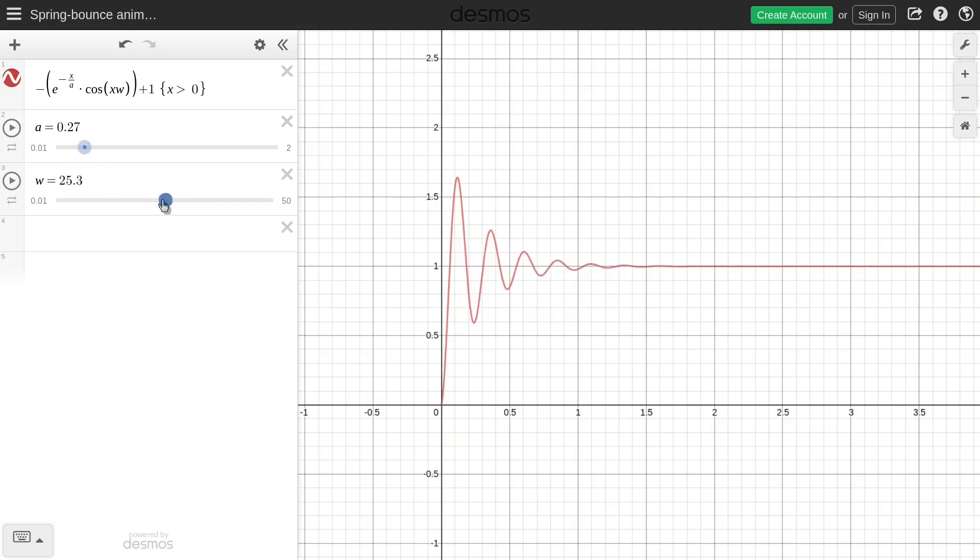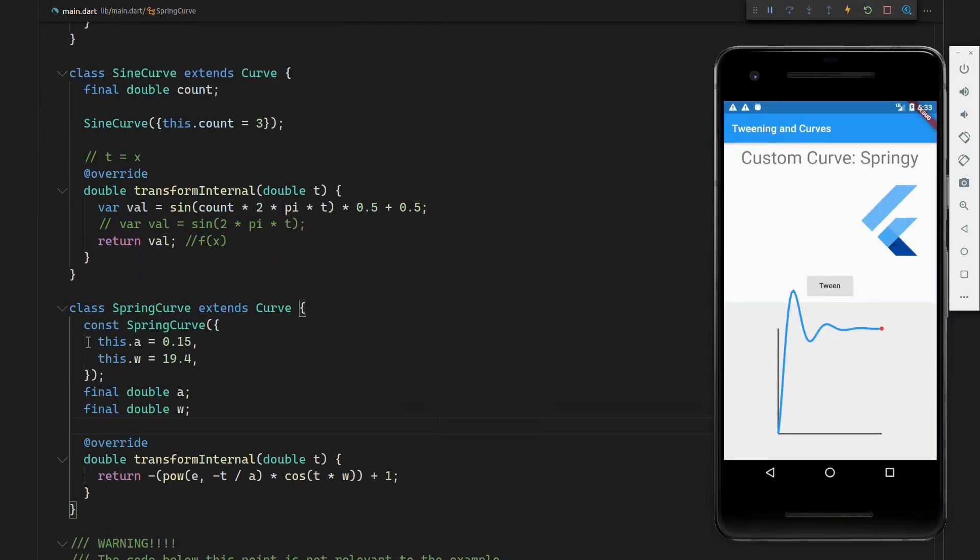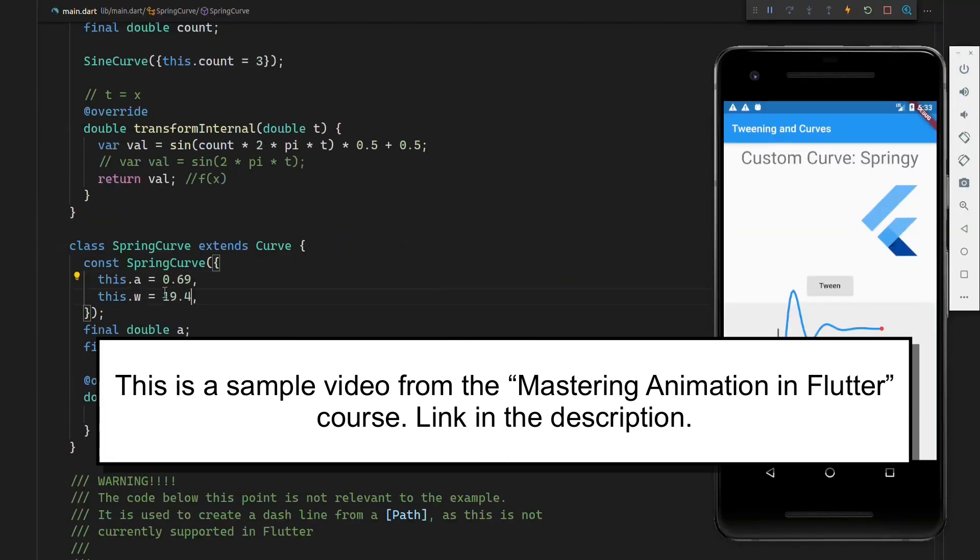And you can see that we have two separate constants, and we can modify these to basically achieve a different springing effect. There are a couple of things to note. If we, for example, increase this to be too much, you will see that the oscillation is very high. So now if it ends at a value of one, the end value will be closer to 0.75, meaning that there will be a jump in the animation once it finishes.